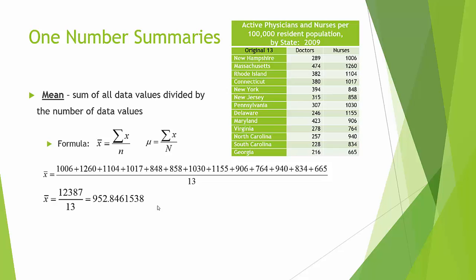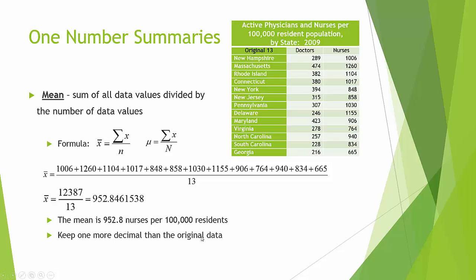In conclusion, the mean is 952.8 nurses per 100,000 residents. You'll notice that my answer has to have a label — the meaning of that number is nurses per 100,000 residents. The rounding rule is to keep one more decimal place than the original data. So that's the mean.